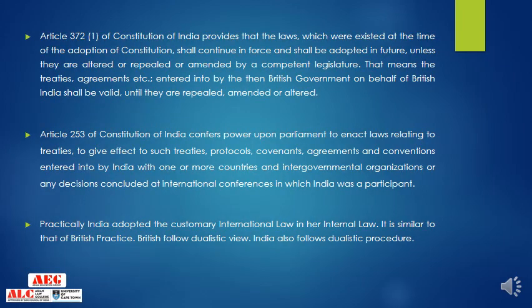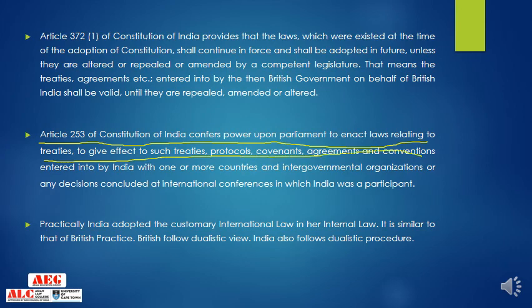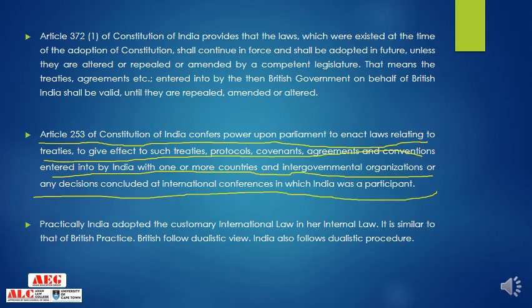Article 253 of the Constitution confers power upon Parliament to enact laws relating to treaties — to give effect to treaties, protocols, covenants, agreements, and conventions entered into by India with one or more countries, intergovernmental organizations, or any decision concluded at an international conference in which India was a participant. India has accepted customary international law in her internal law, similar to British practice. Both India and Britain follow the dualistic approach — two branches of law, one international and one municipal.